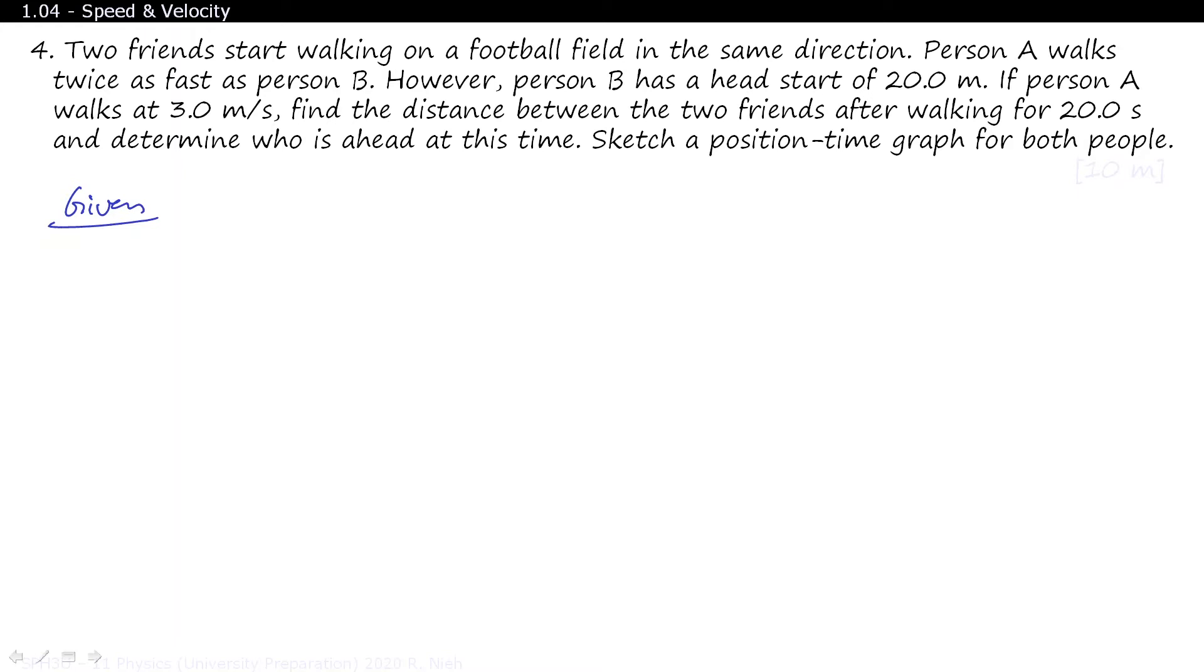We don't really know how fast person A is walking, but we know that VA equals 2 VB. We also know that the initial position of B equals 20.0 meters. If person A, they tell you, VA travels at 3.0 meters per second, figure out how far they are after 20.0 seconds. To figure out how fast VB is traveling, we just rearrange the equation, which equals VA divided by 2. In other words, 3.0 meters per second divided by 2, which gives you 1.5 meters per second. And that's true. Person A walks twice as fast as person B.